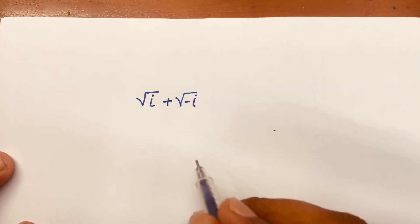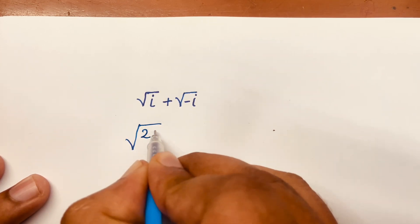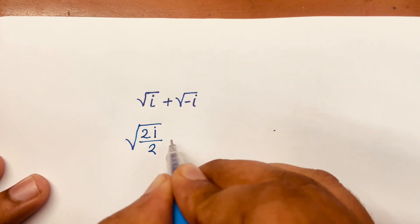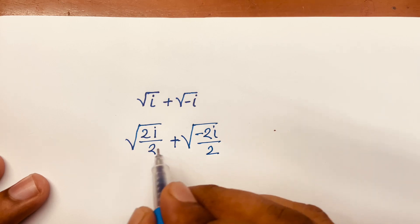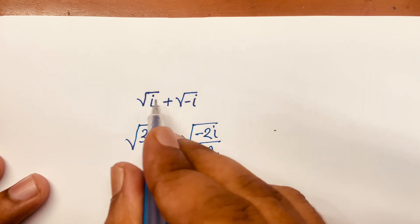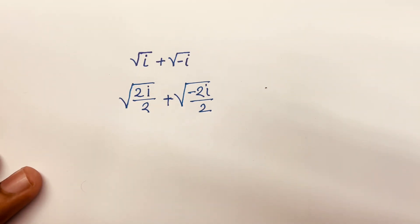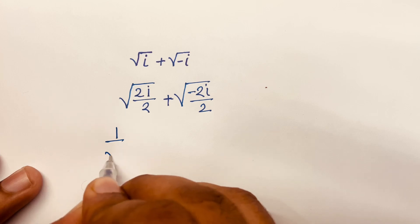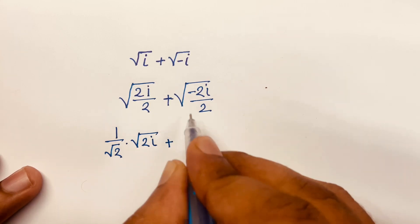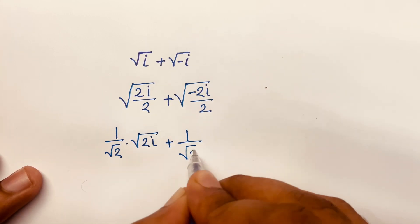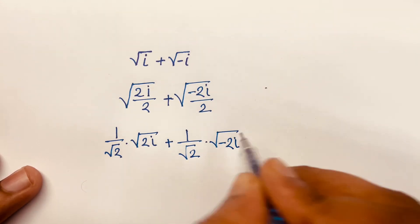To solve √i + √(−i), we rewrite it as √(2i)/2 + √(−2i)/2. The 2 cancels, so we find √i and √(−i) separately. This gives us 1/√2 · √(2i) plus 1/√2 · √(−2i).